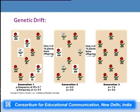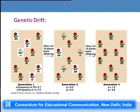In further generations all individuals will have only allele capital R and will display red flowers — white flowers will not appear unless a reverse mutation occurs. This example shows that if only a limited number of individuals reproduce, allelic frequency will change randomly; capital R changed from 0.7 to 1.0 and small r from 0.3 to 0. There are many such examples in nature where this occurs and it is a highly random process.